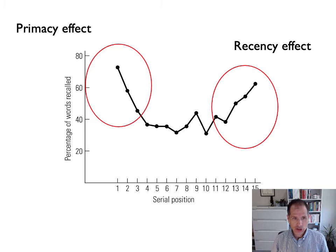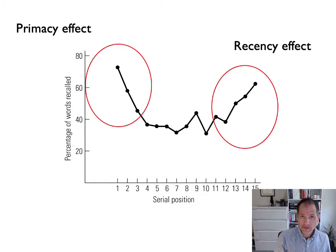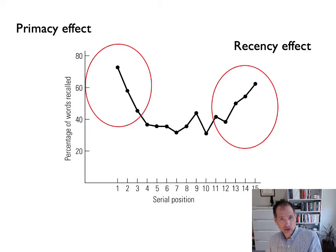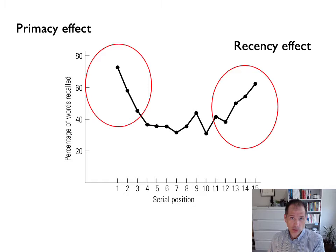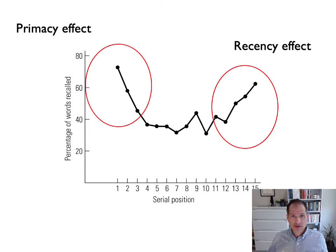We can refer to these two parts by their names. The primacy effect, or primacy curve, refers to good performance on the words at the beginning — the first words you start to rehearse. The recency effect refers to good performance on the words at the end — the ones that were most recent when you were asked to recall. It can't just be that we rehearse the words, because rehearsal alone might help explain the primacy portion of the curve but doesn't explain the recency effect.